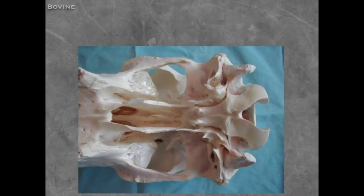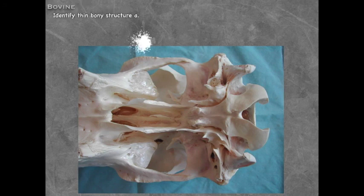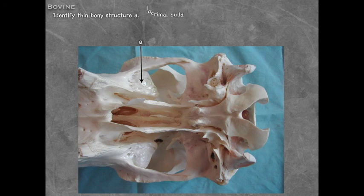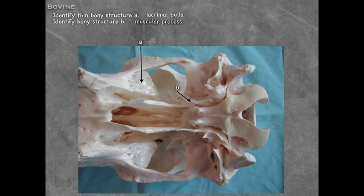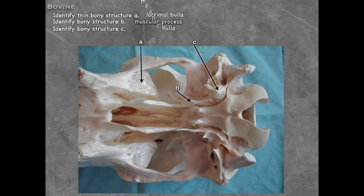Looking at the ventral surface of the skull: the thin bony structure at A is an extension of the maxillary sinus caudally into the ventral part of the orbit, known as the lacrimabola. The pokey structure at B is the muscular process, where muscles of the soft palate attach. At C, even though it doesn't look very bulla-like, is the tympanic bulla. At D, sometimes circular, is the styloid process.